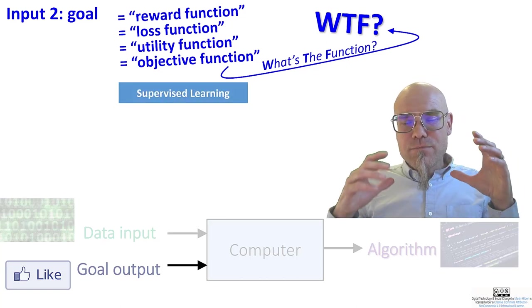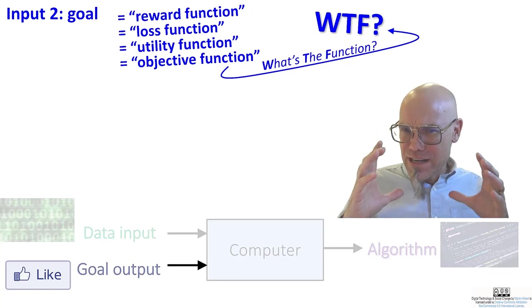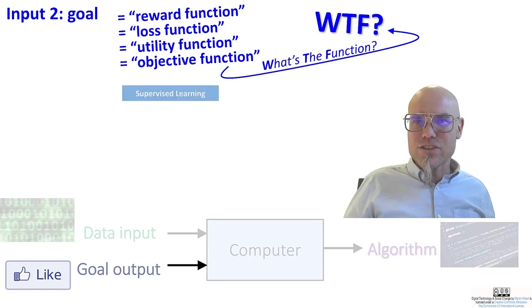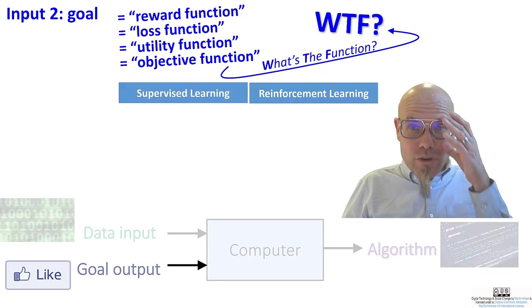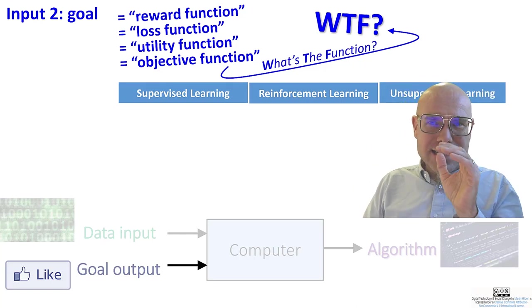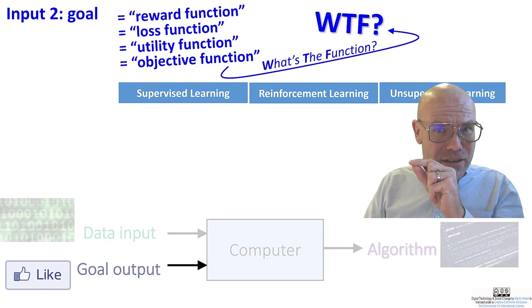Now, there are three broad classes of function, families of function. I'm not saying this or that is the goal. I'm saying these are families of function. There is supervised learning, reinforcement learning, and unsupervised learning. And these are different families of how I can give goals to the machine.